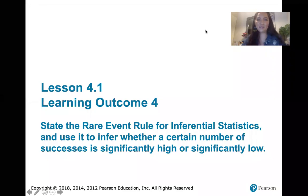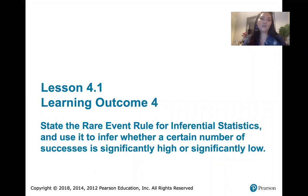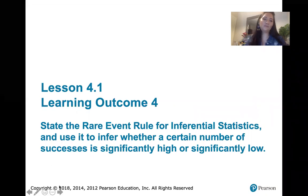In this video, we discuss learning outcome number four from lesson 4.1, which is all about the rare event rule for inferential statistics. We're going to use it to infer whether a certain number of successes is significantly high or significantly low as well.